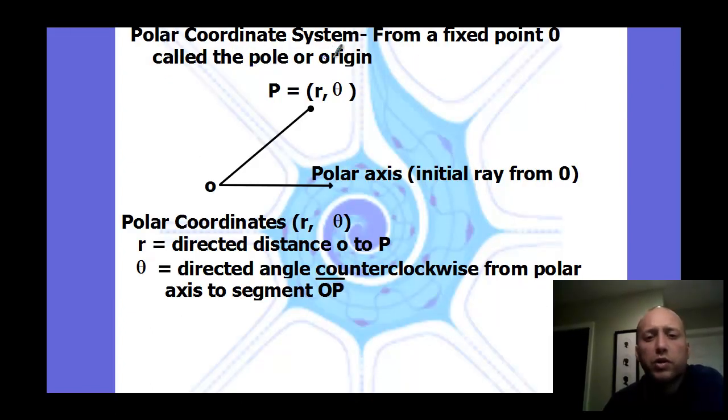The polar coordinate system is from a fixed point O, which is called the pole or the origin. We have the pole or the origin here, which we usually put at the origin of the coordinate plane, similar spot. But we have the polar axis here. It's the initial ray from O. So here we have the polar axis.